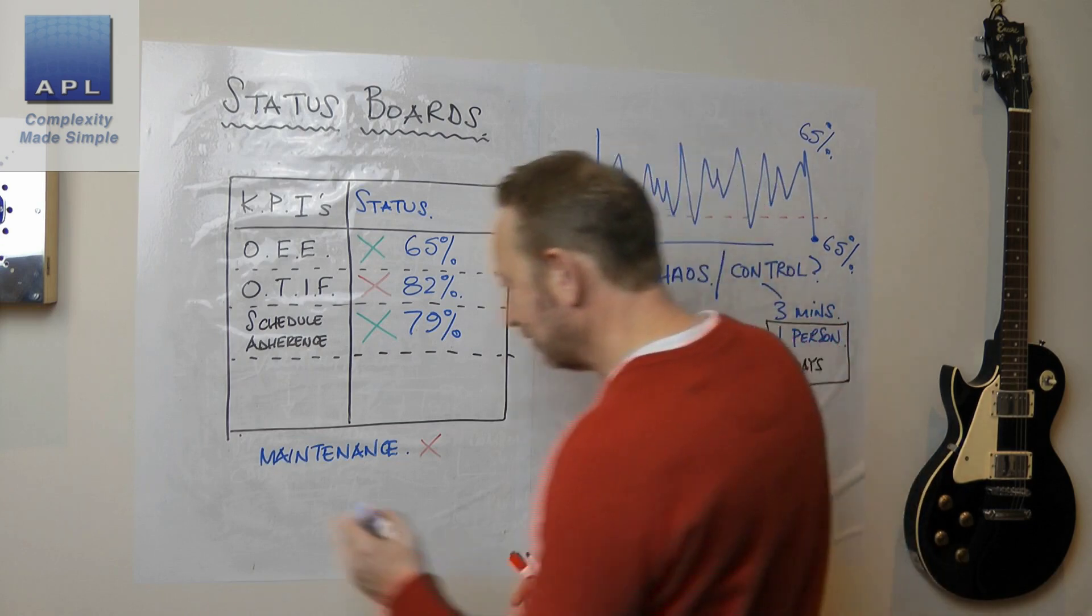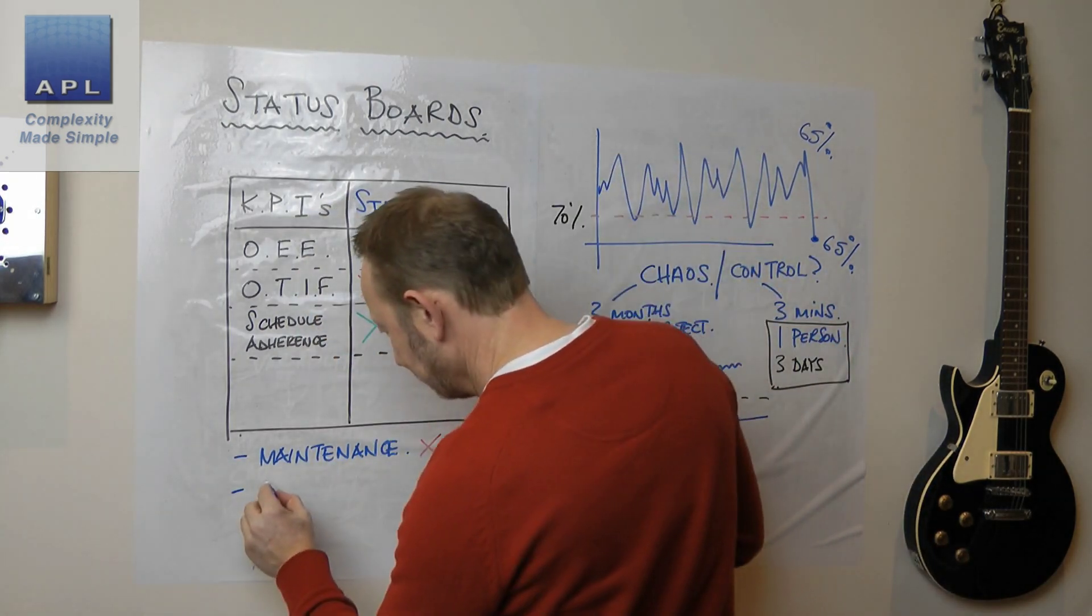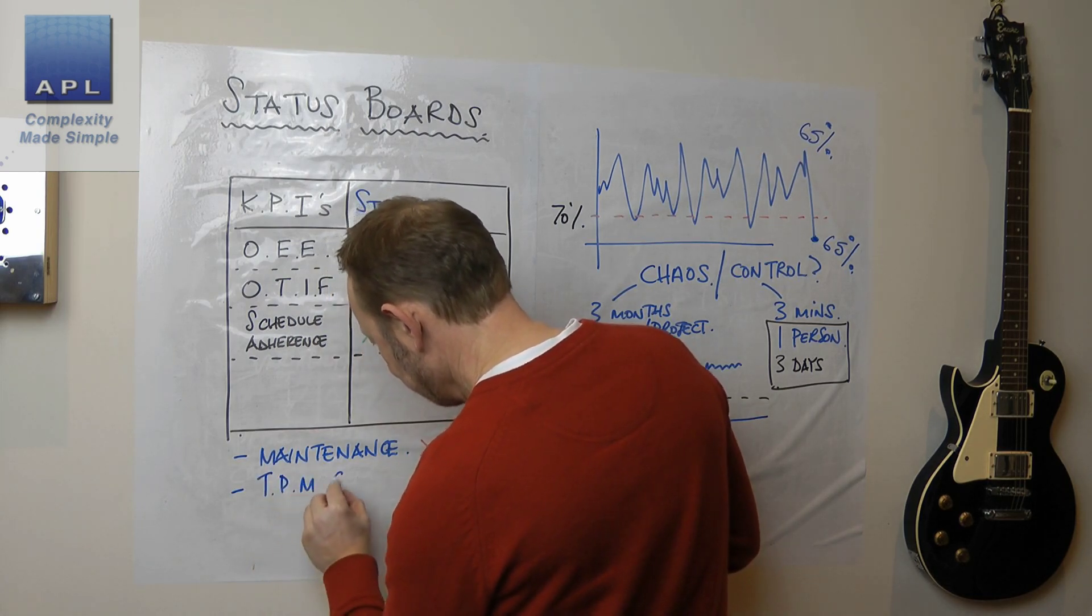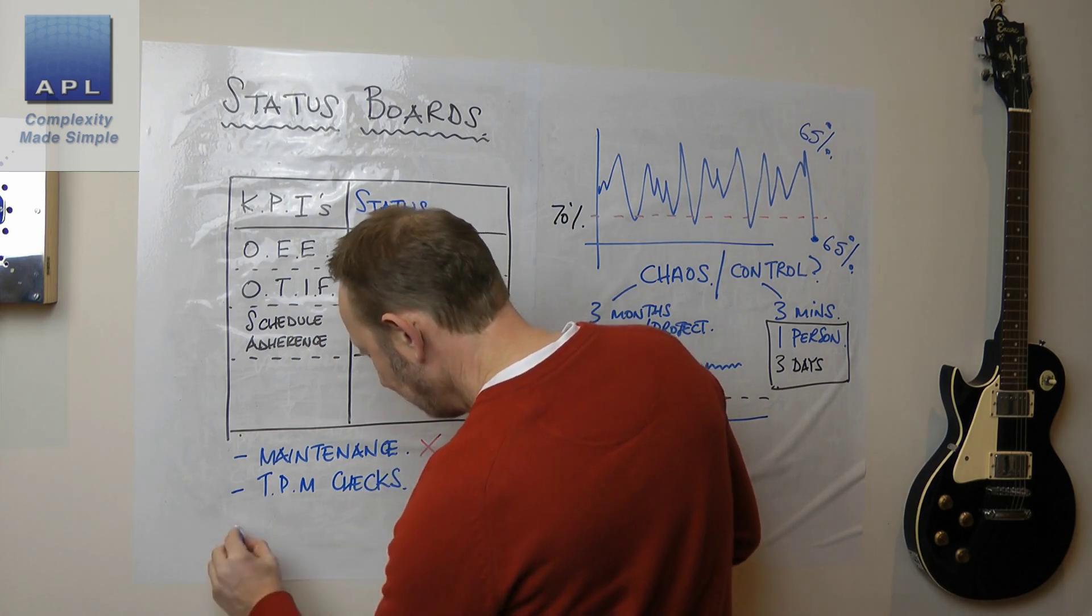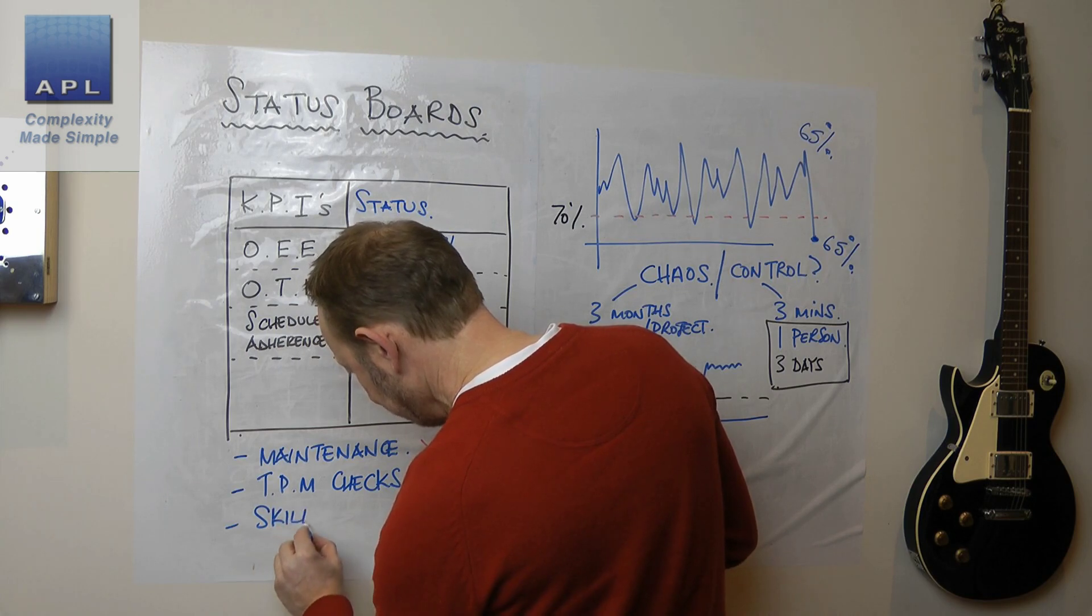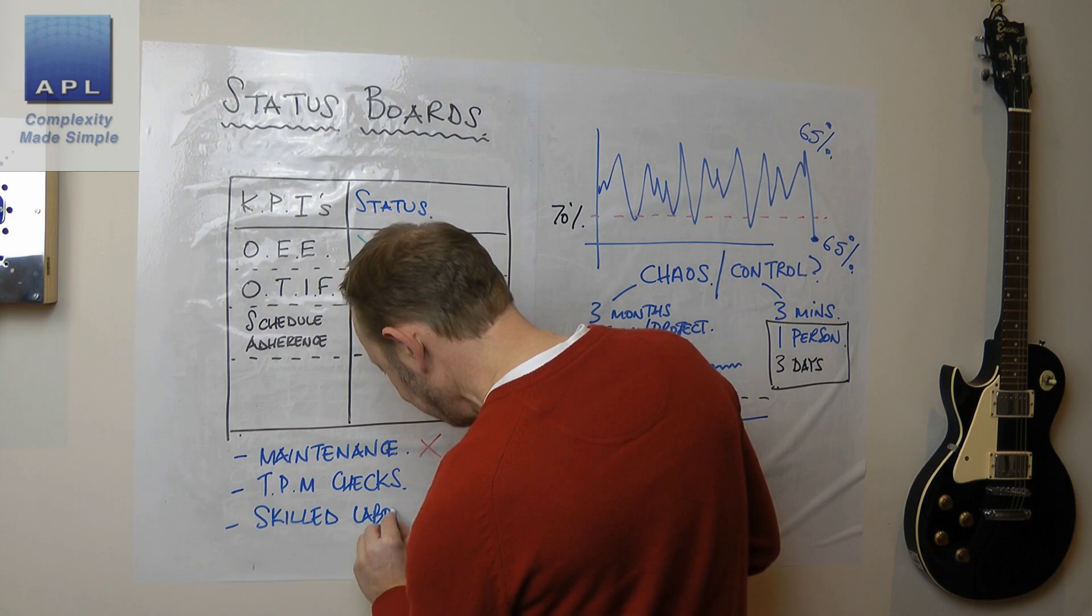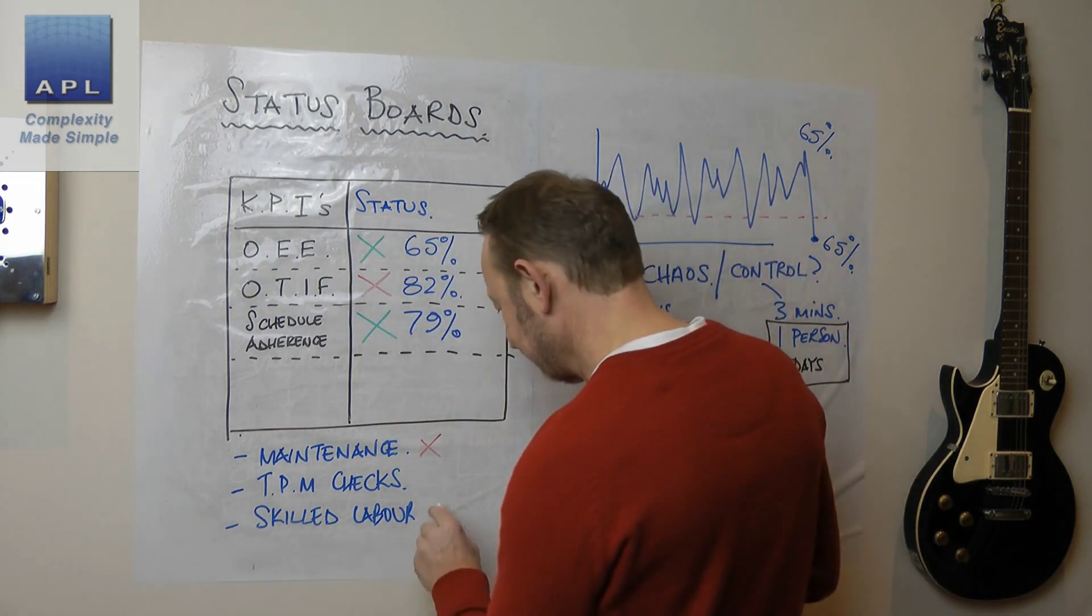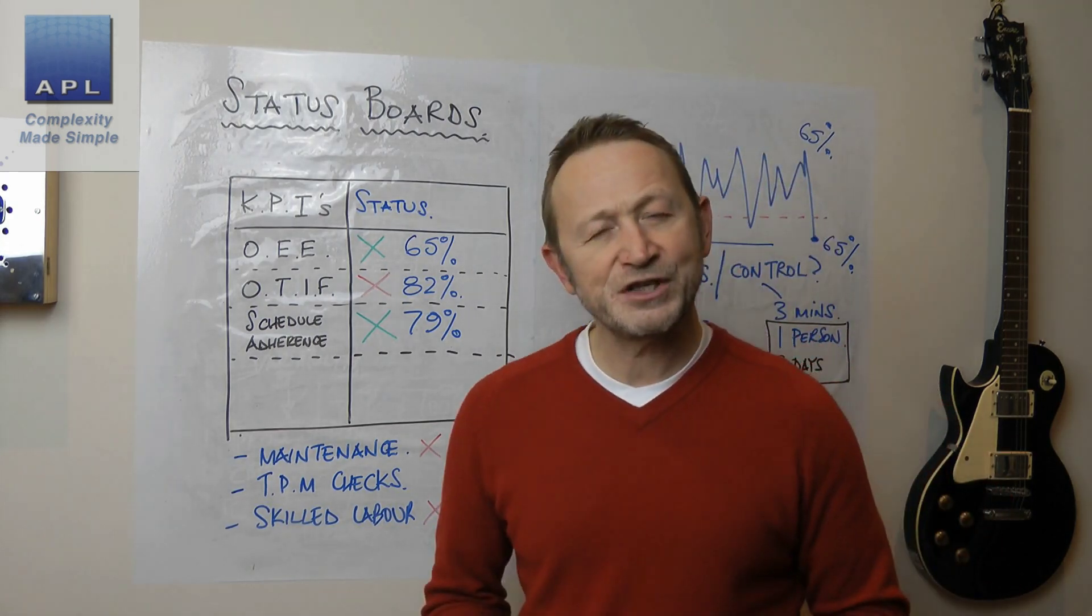So there's no problem solving routine. There's nothing extra to be done here. It's literally saying you have a status, which is red and it needs to go green, that there is no intermediate value. There's no different values like there is up here. It's either right or it's wrong. What else might you have on here? So you might have, has the maintenance been done? Have the TPM checks been done? Do you have all your skilled or trained labor in today? Yes or no?